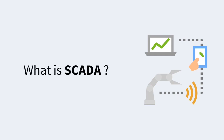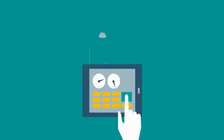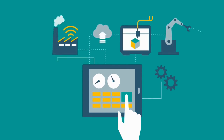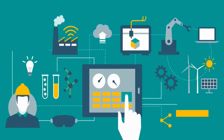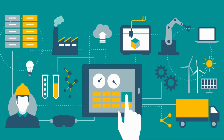SCADA is one of the important topics in industrial automation. SCADA is an acronym for Supervisory Control and Data Acquisition. In simple terms, it is a system that enables us to capture and gather data of industrial processes in manufacturing and industrial automation.